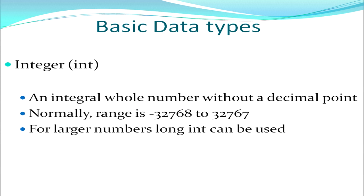Let us look at these three basic data types. The first one is integer, short form we call it int. An integer stores a whole number — any number which is without a decimal point is an integer. Normally the range of an int data is between minus 32768 to 32767. If we want to store numbers which are larger than these, which go out of the specified range, then we use long int. So whenever I want to store a whole number, I need to have an integer data type.